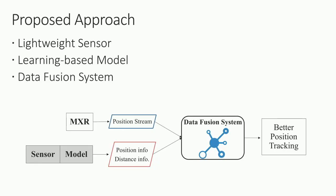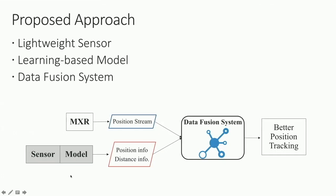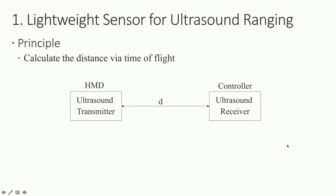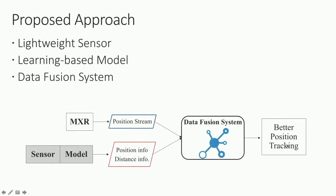Our proposed approach to track the controller's position when it goes out of field of view breaks into three steps: first, we utilize a lightweight ultrasound sensor; second, we generate a learning-based model; and third, we establish a data fusion system to integrate all available information. The data flow takes mixed reality sensor data providing a position stream, combines it with our sensor system and learning-based module, and generates improved position tracking information.